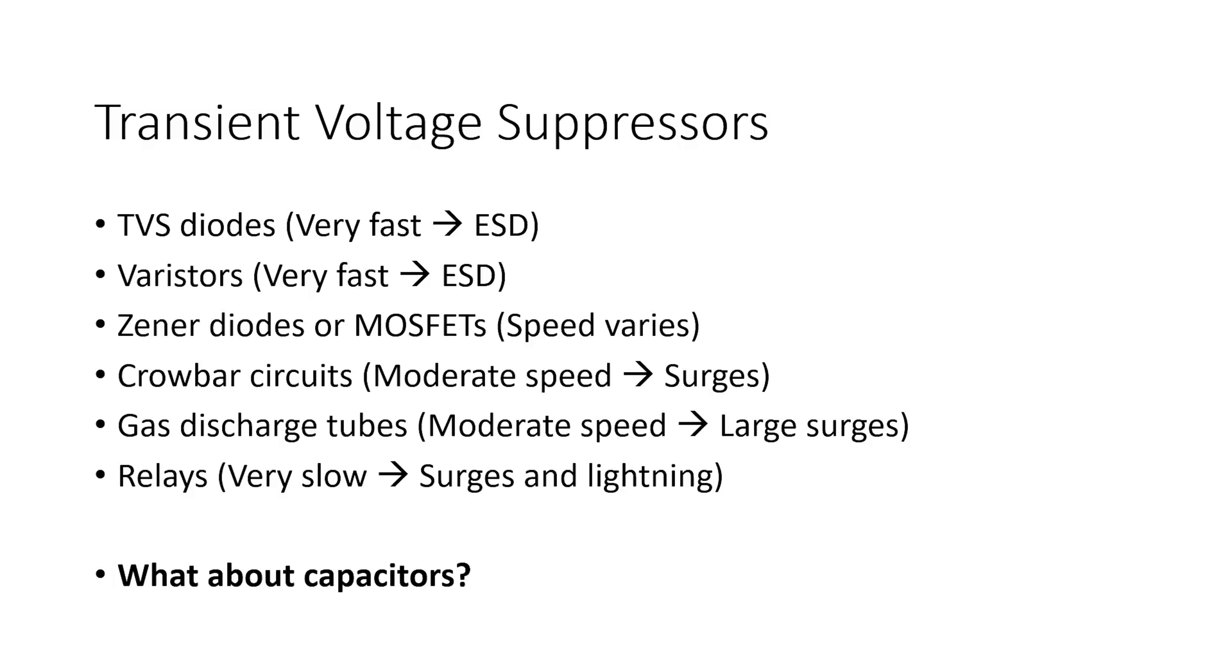If we look at the different options, we've got several in this list. Obviously, TVS diodes, there's also varistors, both of those are suitable for ESD suppression. There's also Zener diodes or MOSFETs. There's also crowbar circuits, they have moderate speed, they're essentially meant to shunt surges and possibly faster pulses of over voltage. You have gas discharge tubes meant to withstand much larger surges. And you can even use relays, specifically voltage sensing relays. Those are very slow, more meant for slow phenomena like surges and lightning.